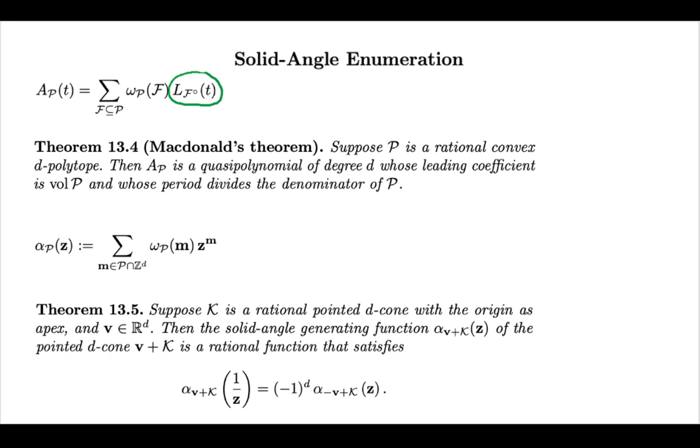we can now add up those rational functions for a non-simplicial cone from a triangulation. And contrary to chapter 4, there's nothing to worry about now because I don't have to use inclusion-exclusion. The angles simply add up.